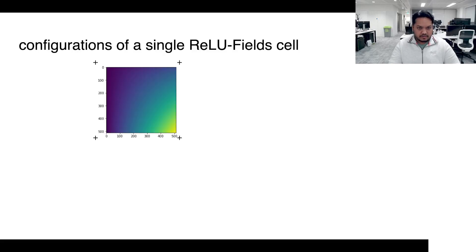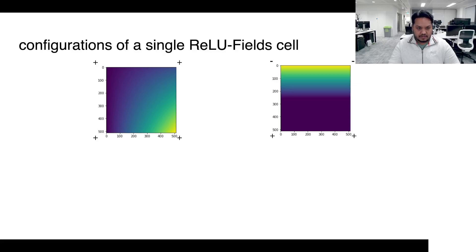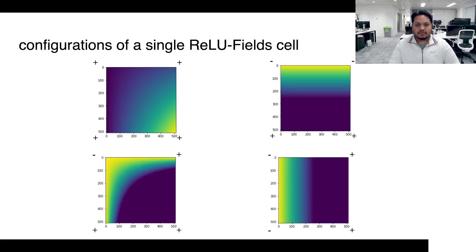Here, we show a small subset of the configurations, using which various hard creases in the density can be modelled by the ReLU field cell. If all the values on the corners are positive, then the behaviour simply reverts to bilinear interpolation, whereas for other combinations, various types of hard creases or surfaces can be modelled.